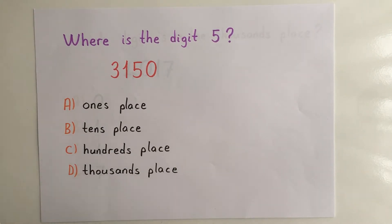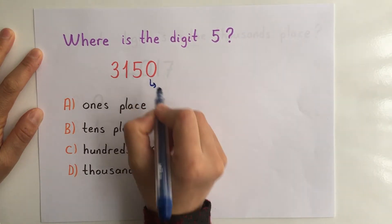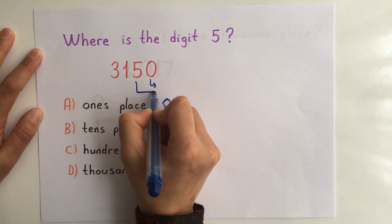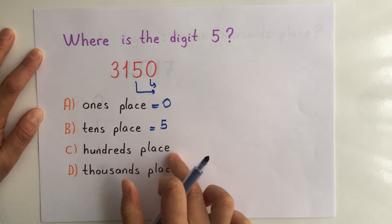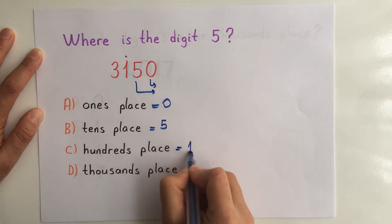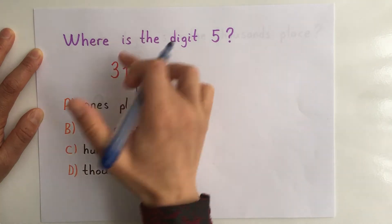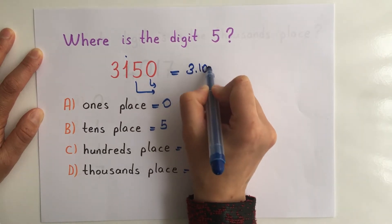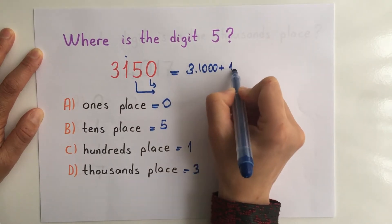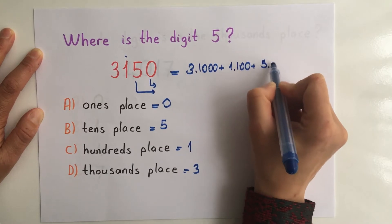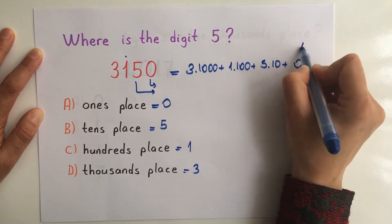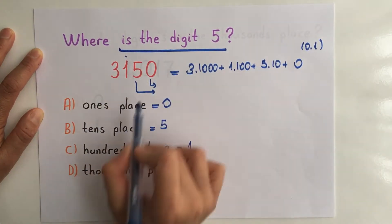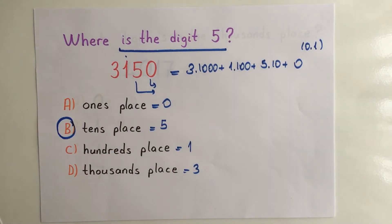Where is the digit 5? Let's look: 0 is on the ones place, and on the tens place there is five. On the hundreds place I can see one, and on the thousands place it's easy to see three. So it's 3 times thousands plus 1 times hundreds plus 5 times ten. You don't have to write zero times one because it's already zero. So where is the digit 5? It is on the tens place — that's the answer.